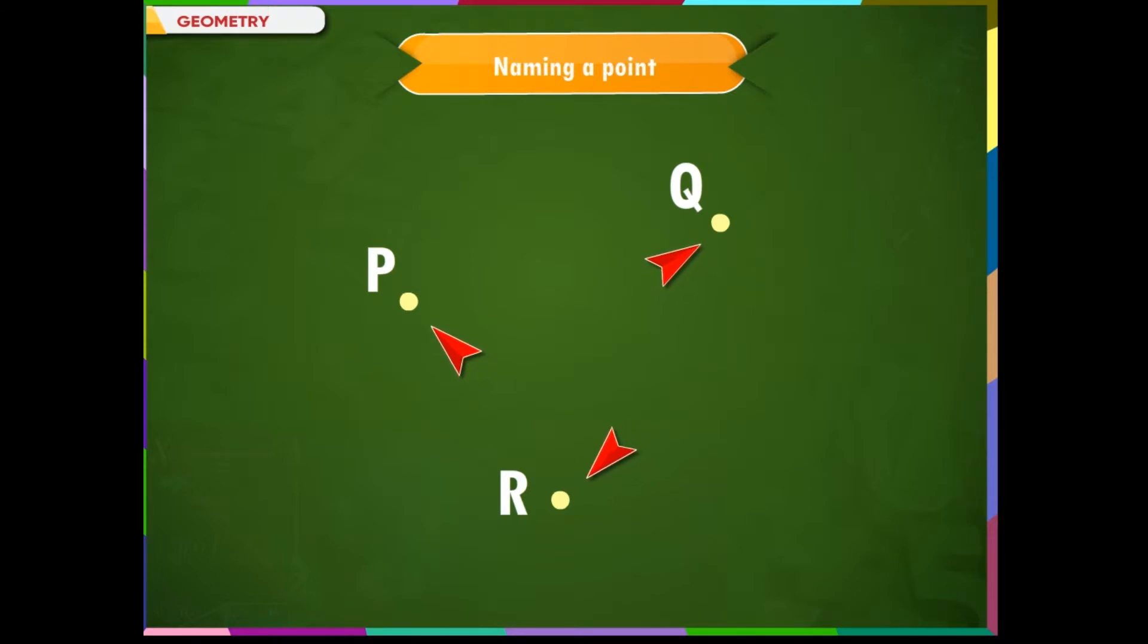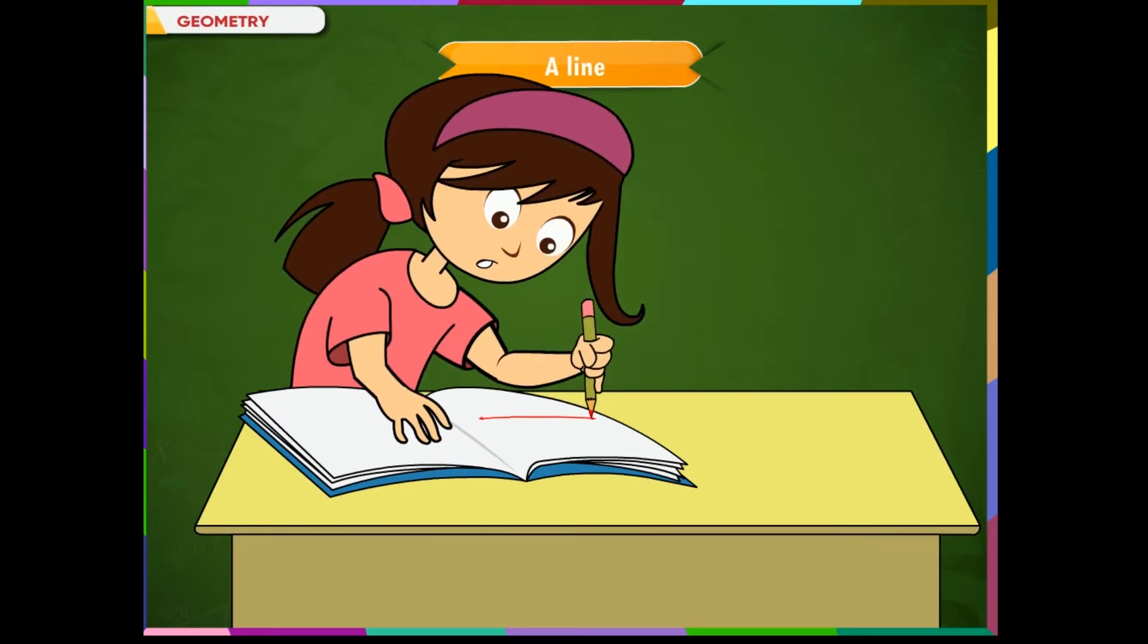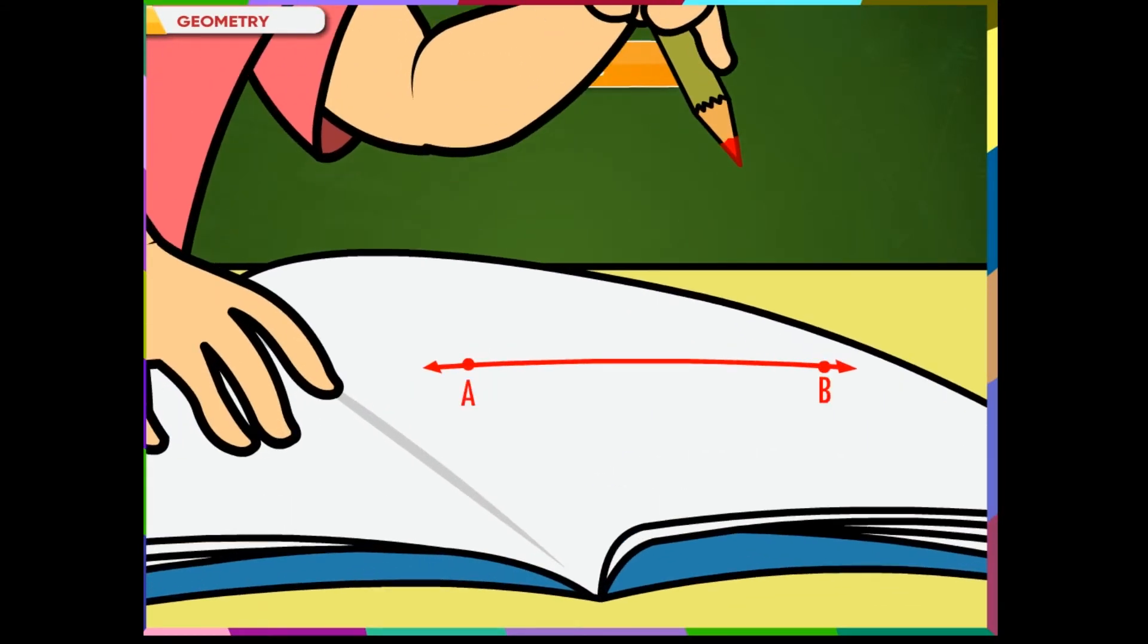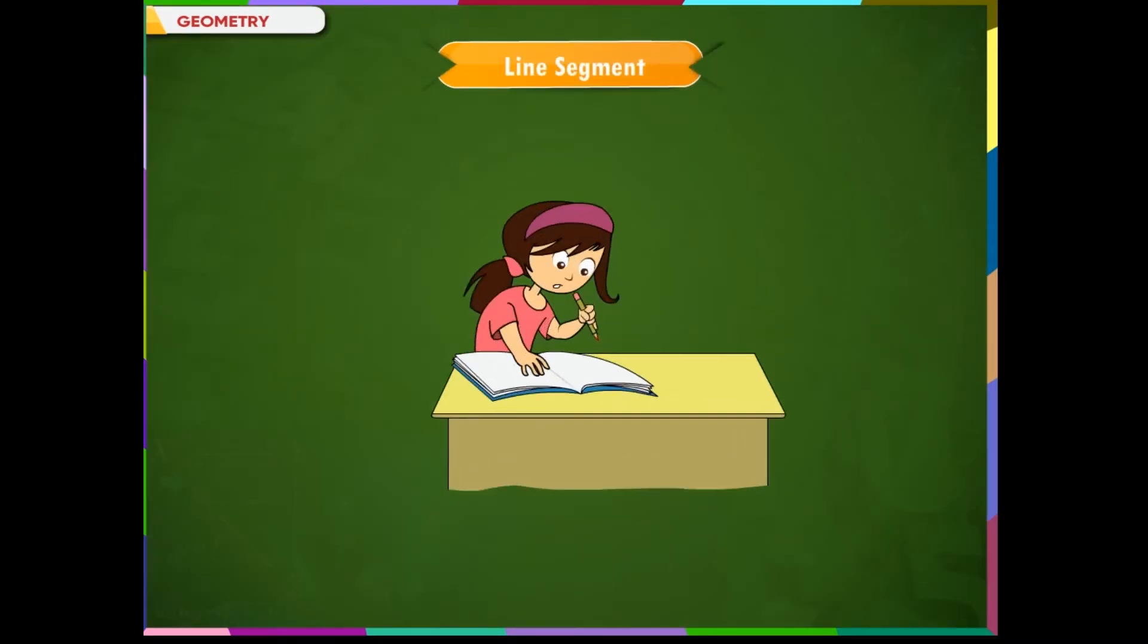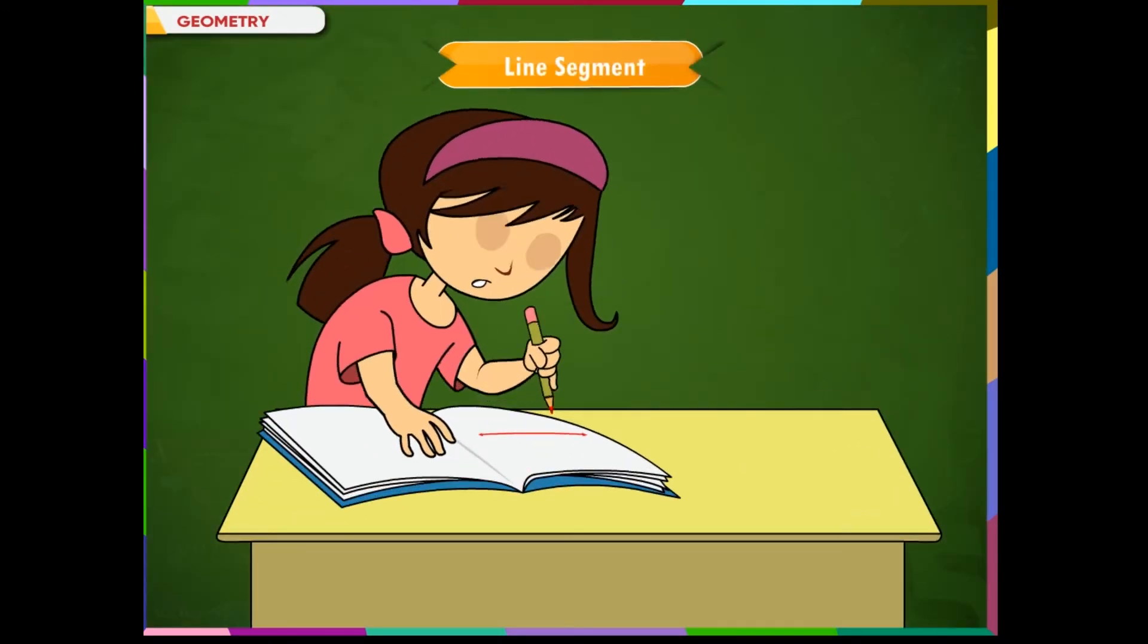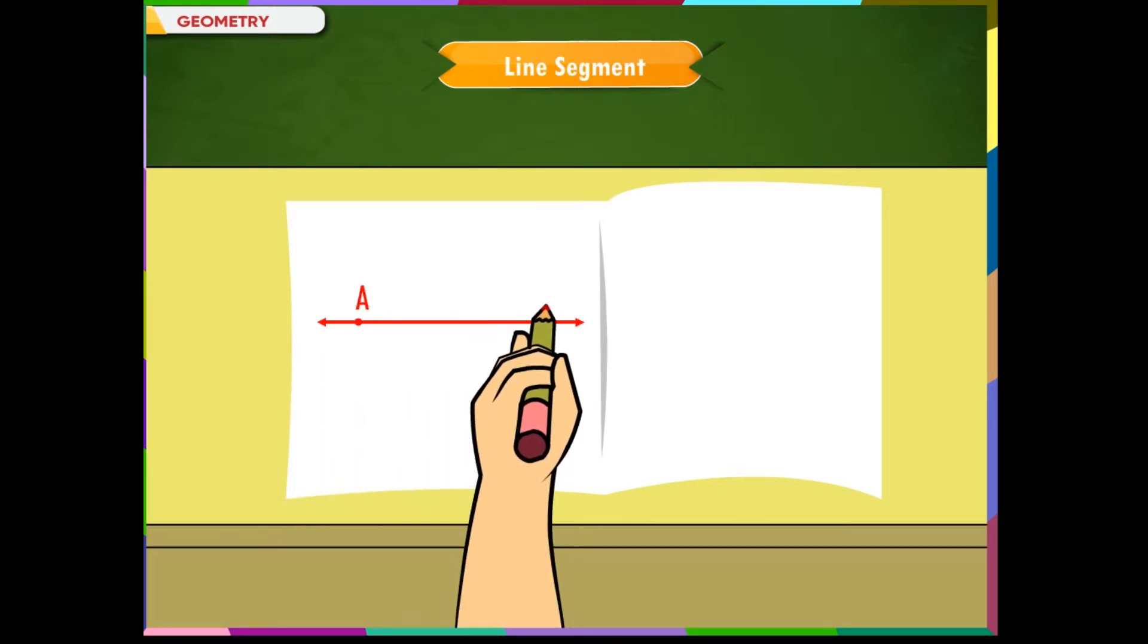The next most important fundamental concept of geometry is line. Shalu draws a line. We can mark many points on this line and name them too. She marks two points A and B on the line to get a line segment. She measures and finds the length of the line segment to be 5 cm.